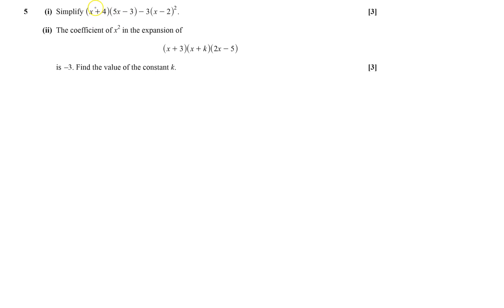Let's simplify this. I'm multiplying the first bracket, so that will give me 5x squared minus 3x plus 20x minus 12 minus 3.